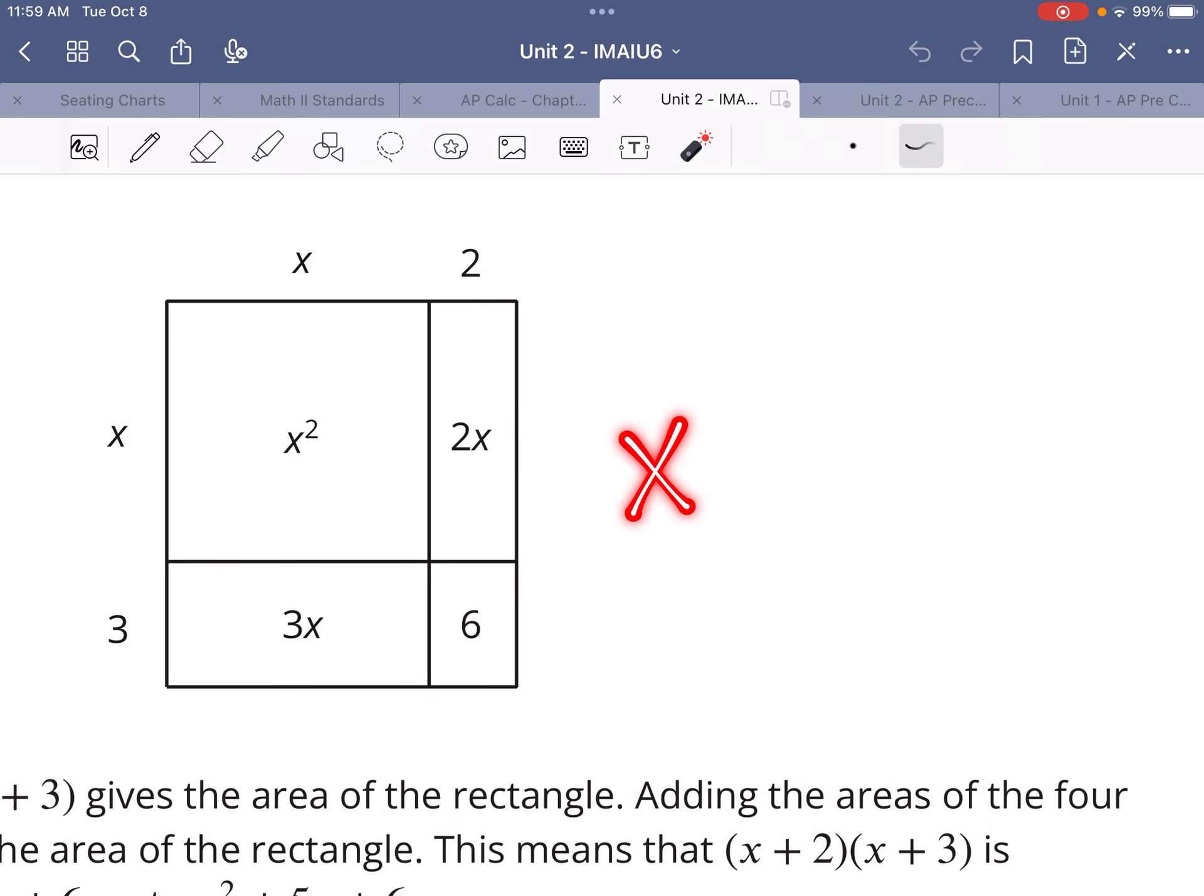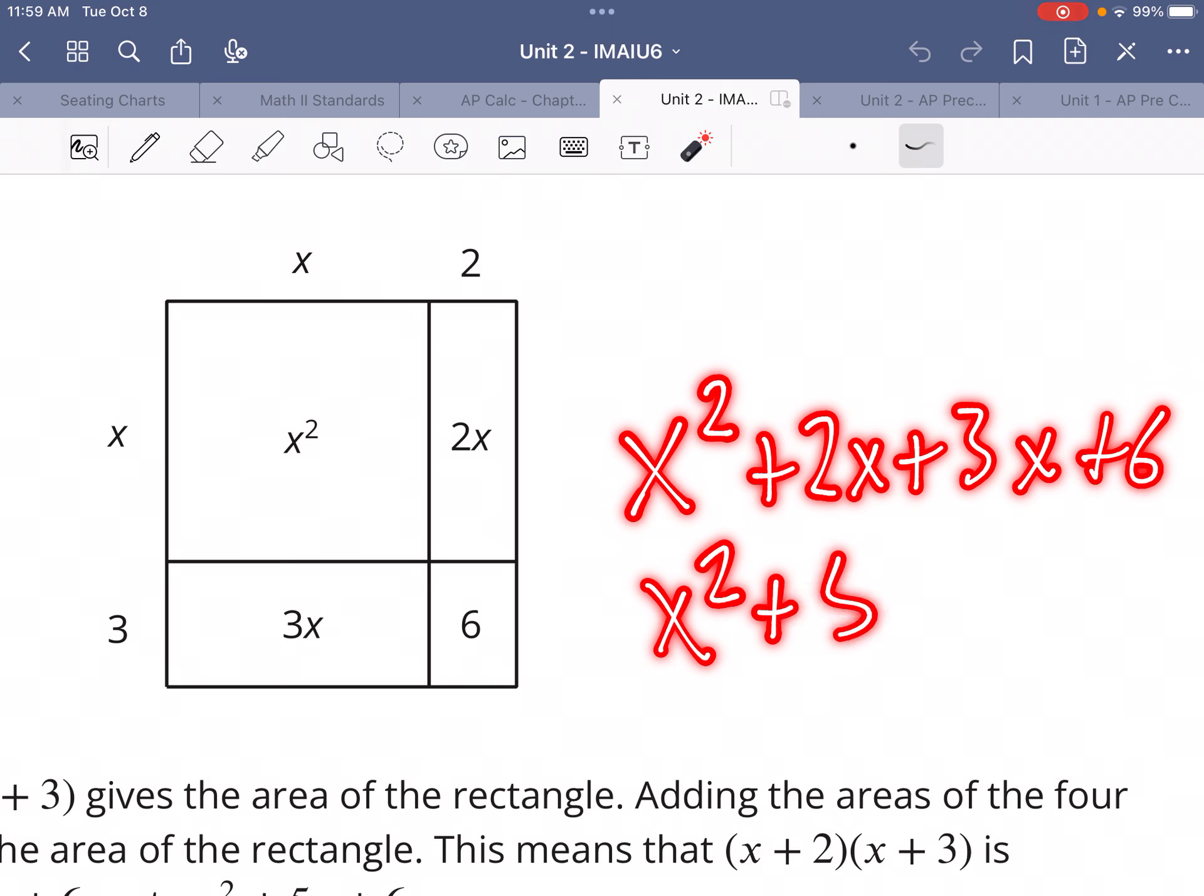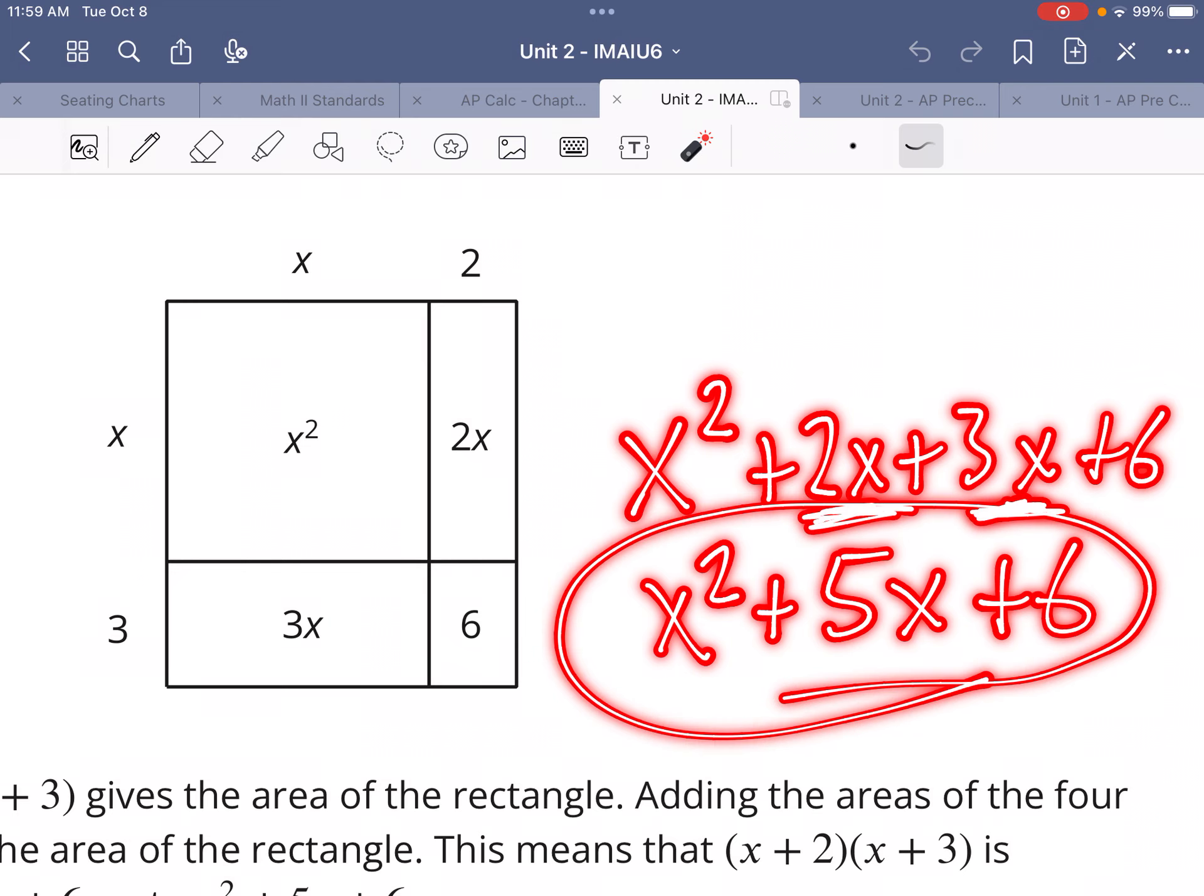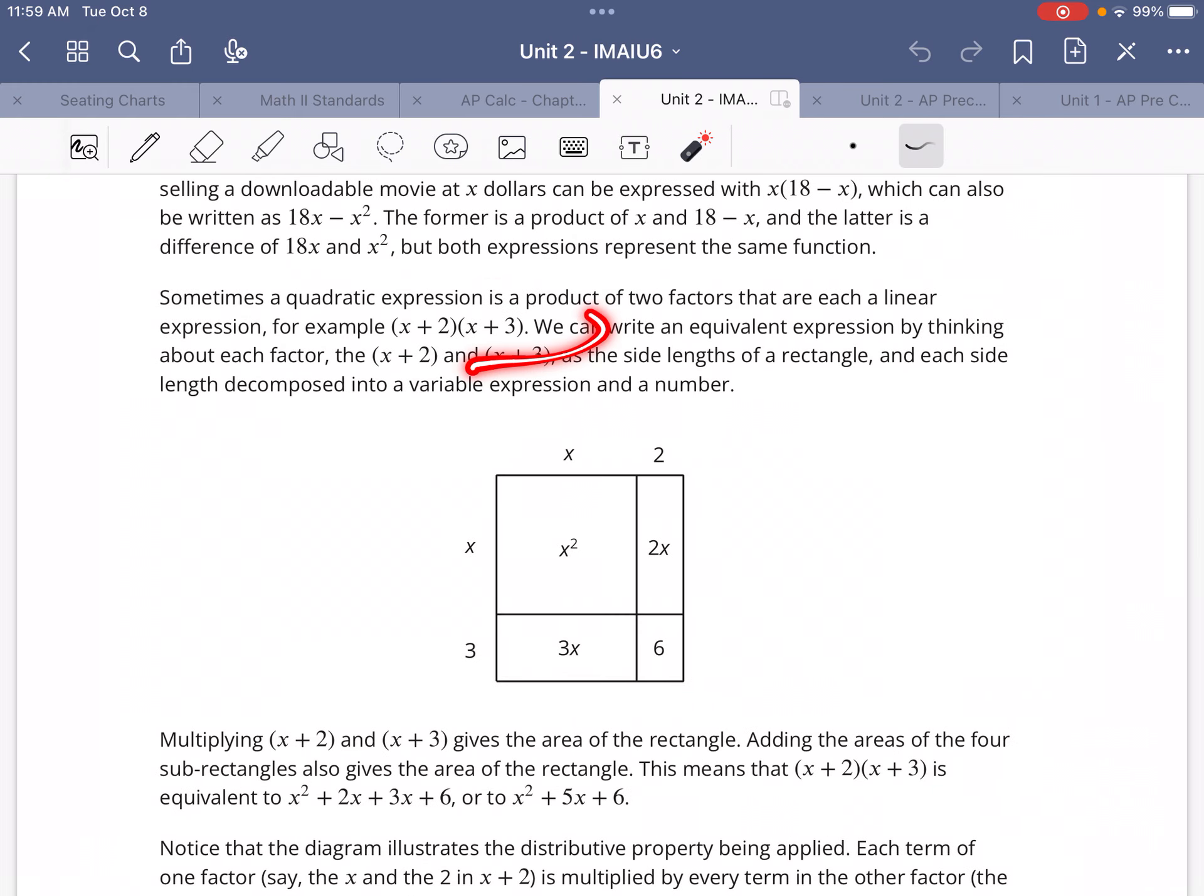What we could do then is say the total area is x² + 2x + 3x + 6. Or simplifying, x² + 5x + 6, because these are like terms. They're the same kind of thing and can be added together. So this right here and this over here are equivalent expressions. They give you the same results, even though they look a little bit different.